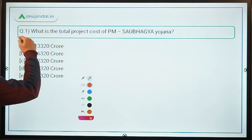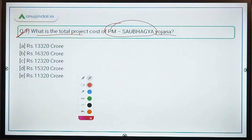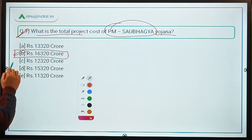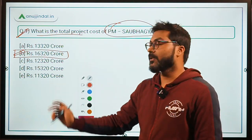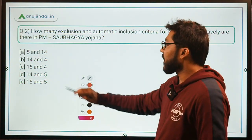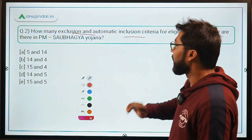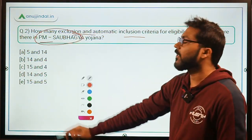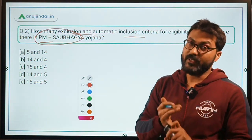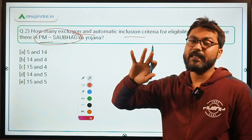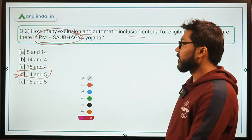Now let's look at some exam questions. Question 1: What is the total project cost of PM Saubhagya Yojana? Answer: Rs. 16,320 crore with a gross budgetary support of Rs. 12,320 crore. Question 2: How many exclusion and automatic inclusion criteria for eligibility are there respectively in PM Saubhagya Yojana? Answer: 14 exclusion criteria and 5 automatic inclusion criteria — option D, 14 and 5.